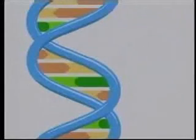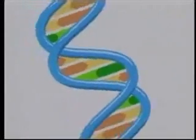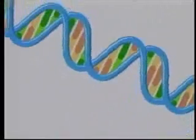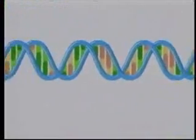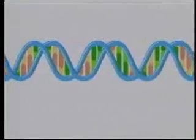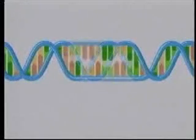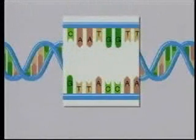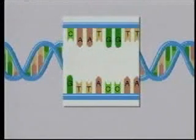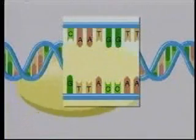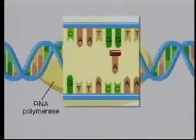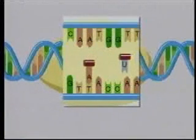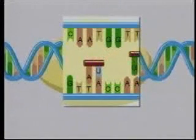The manufacture of RNA from a DNA template is called transcription. Transcription begins when the two strands of DNA in a specific region unwind and separate. Only one strand of the DNA serves as a template for the new RNA.